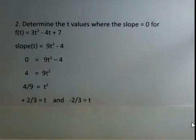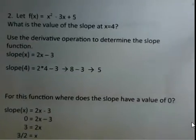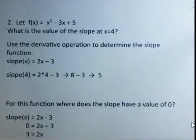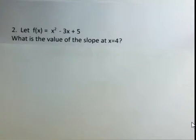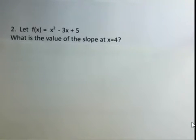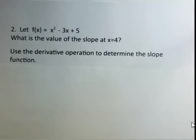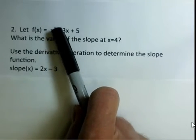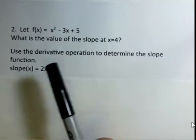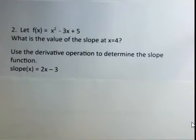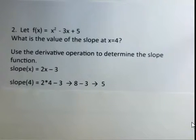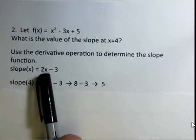Let's try another example. Suppose we have x² - 3x + 5. We want to know the value of the slope at x = 4. To get the slope function, we use the derivative. The derivative of x² produces 2x, the derivative of -3x produces -3, and the derivative of a constant is 0. So our slope function is 2x - 3. We want x to be 4, so we replace x with 4: 2(4) - 3 = 8 - 3 = 5.